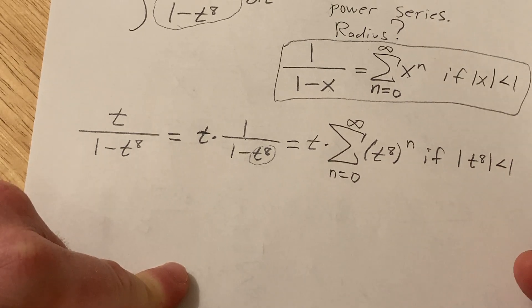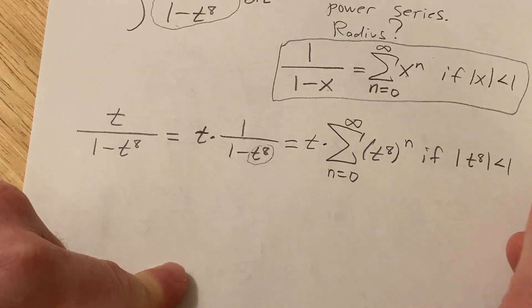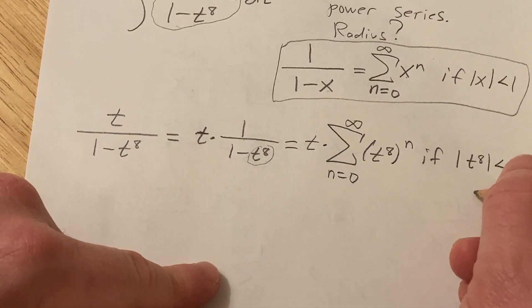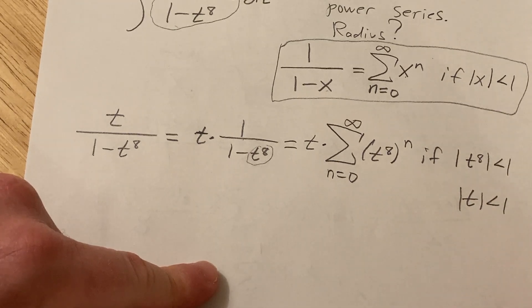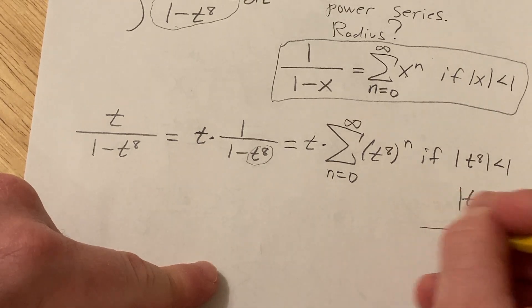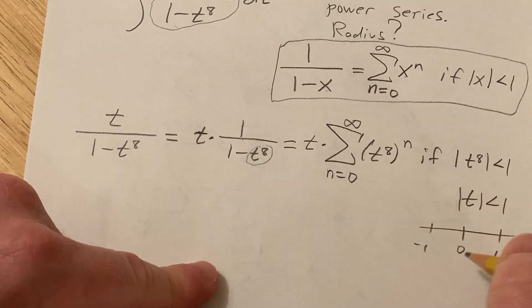And that basically means that the absolute value of t is less than one.